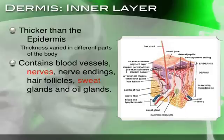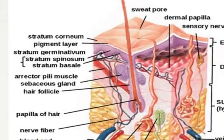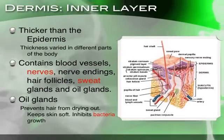Let's talk first about the oil glands, which we mentioned earlier. The oil glands — also called sebaceous glands — secrete a certain type of oil that prevents the hair from drying out, keeps the skin soft, and inhibits bacterial growth. Those are the functions of the oil glands, and you can help with that by using lotion.